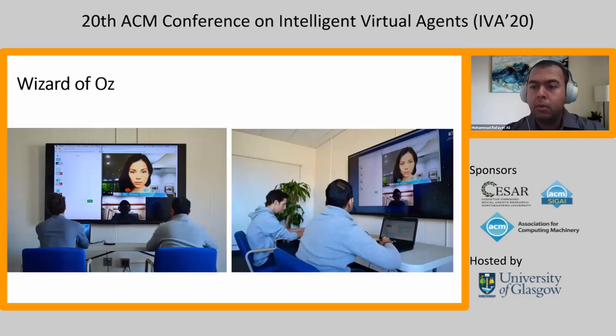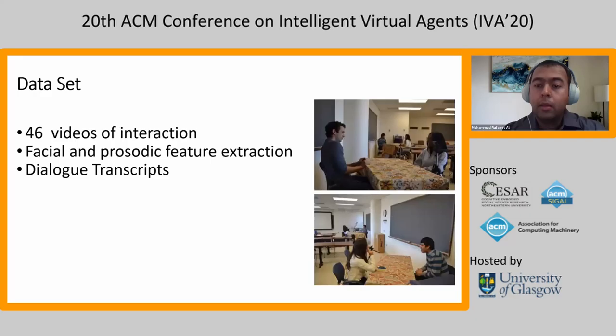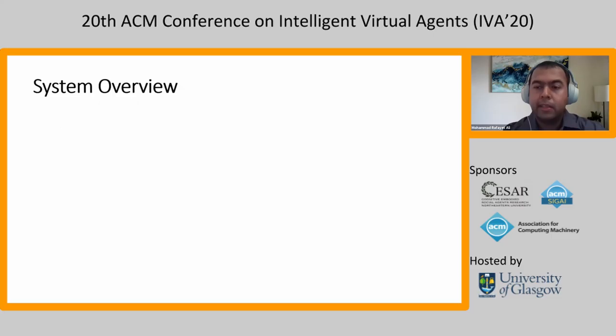At the beginning, we had no training data, which is why we used a Wizard of Oz technique to collect data from human subjects. There were two human operators running the system. One was responsible for giving real-time feedback, and the other one was responsible for conducting the conversation. Using the Wizard of Oz technique, we conducted a study with college students in the context of speed dating. From this speed dating study, we collected 46 videos of interaction between Lisa and the participants. We extracted facial and prosodic features, and also gathered the dialogue transcripts. We used this dataset to train a machine learning model to generate feedback.